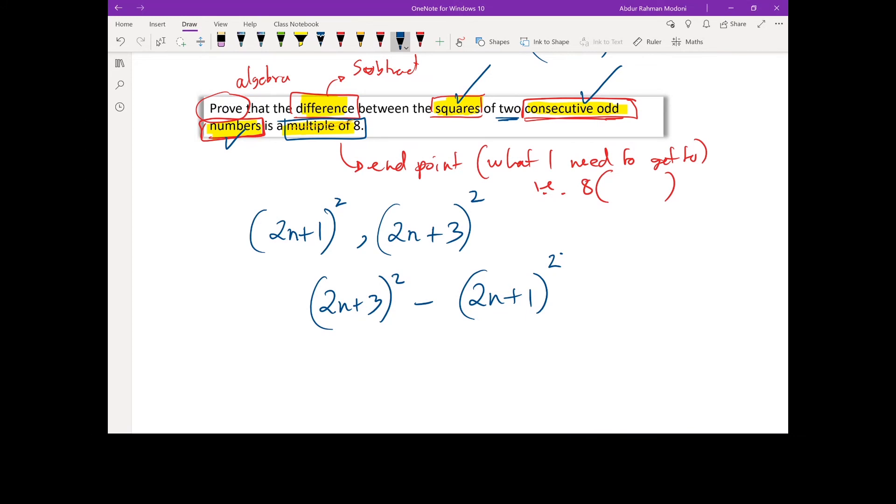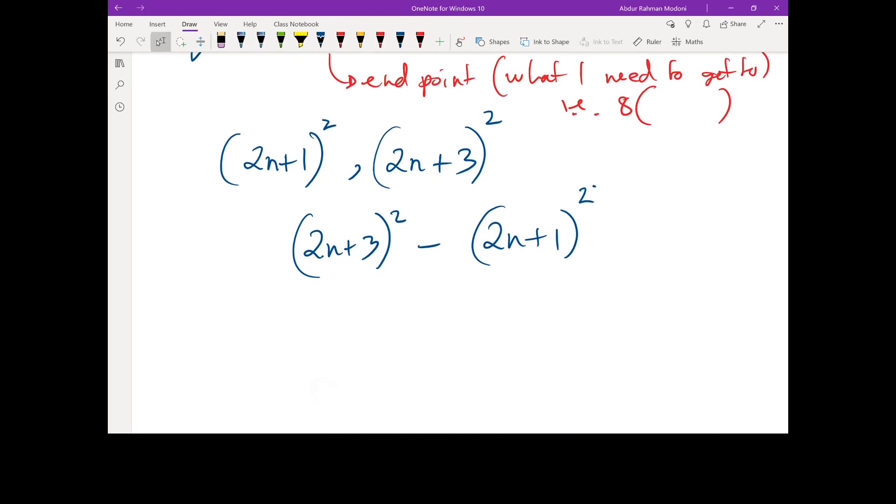So we're taking the information and we are writing it using algebra and then we'll do the algebra which we should be confident with because we've done algebra for the last, what, how many years, right? So I've done the difference, square, consecutive odd numbers. I'm going to have to show this as a multiple of eight, but before I can do that, I need to start doing some working out. What am I going to do first? Expand them.